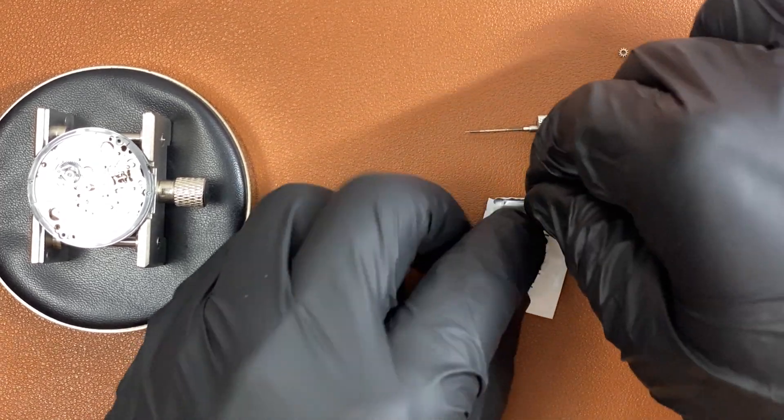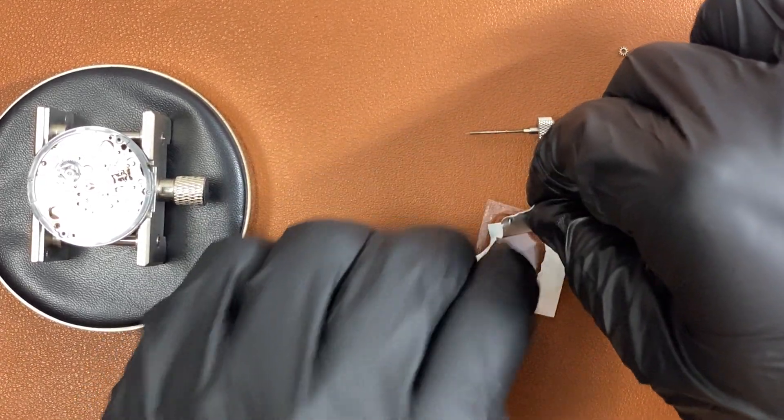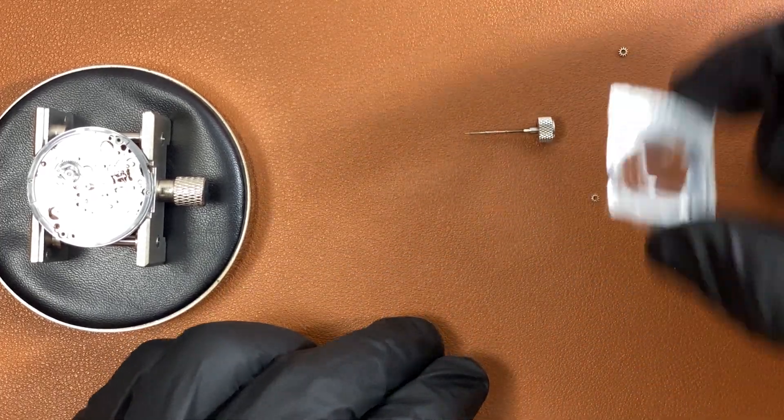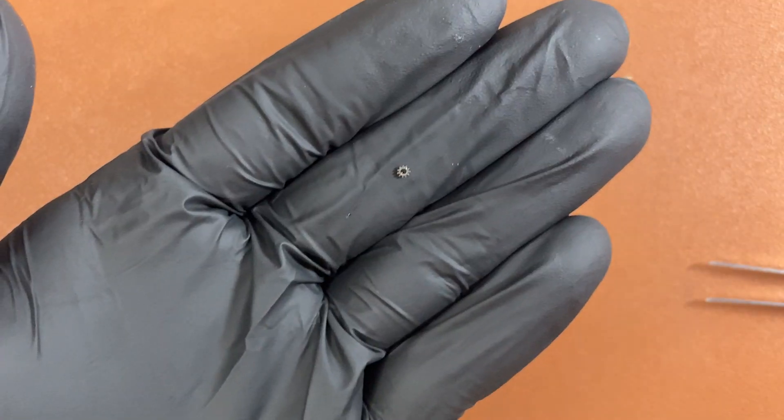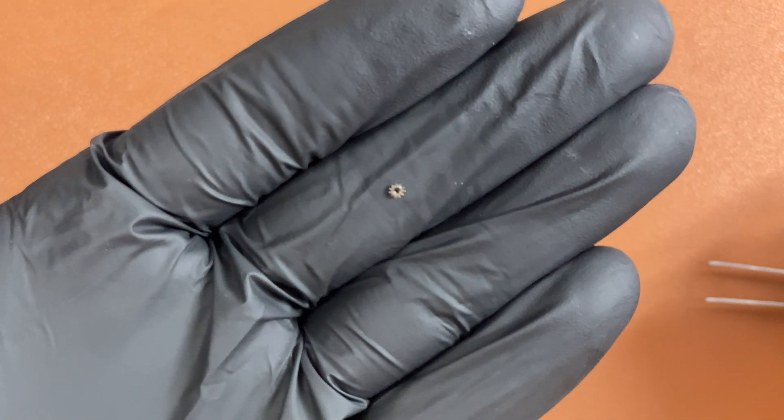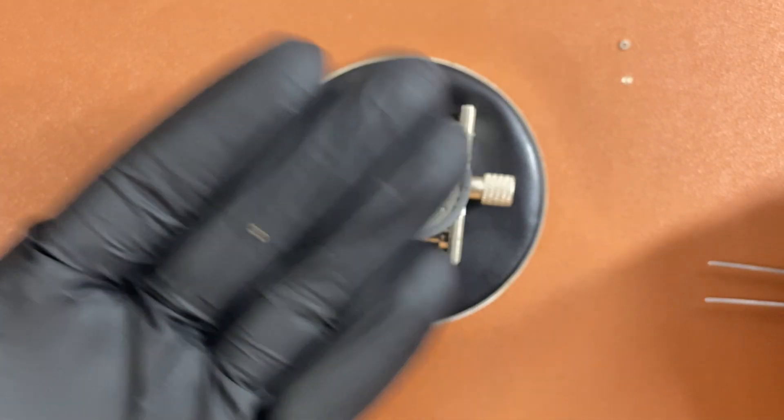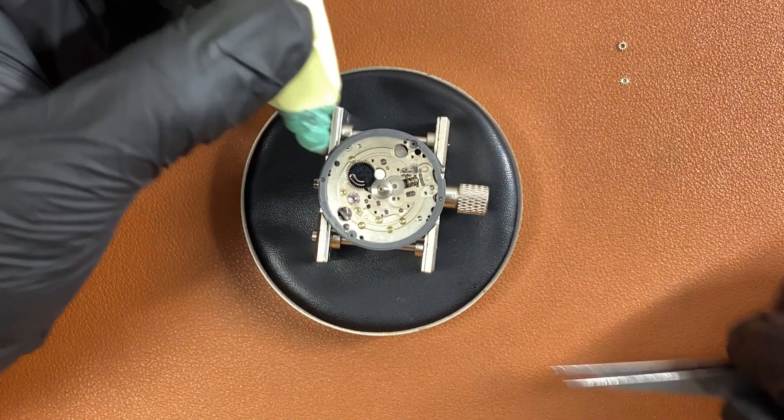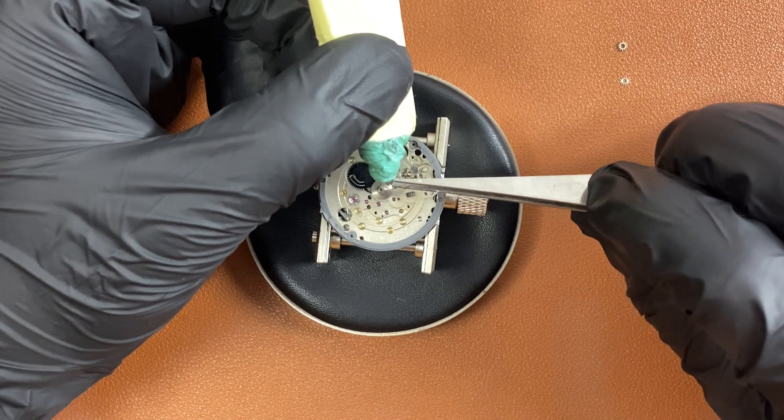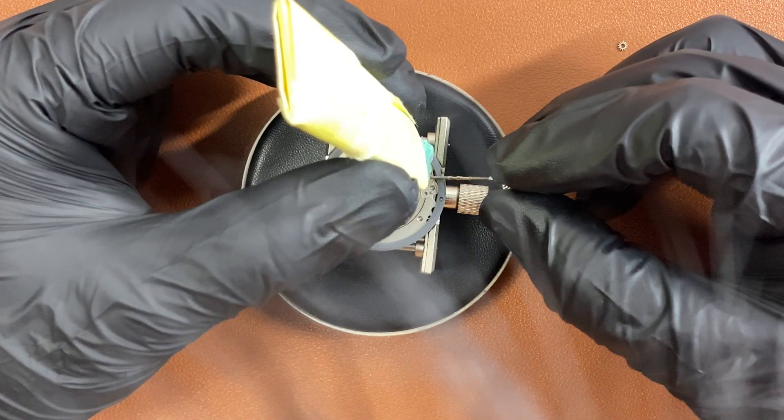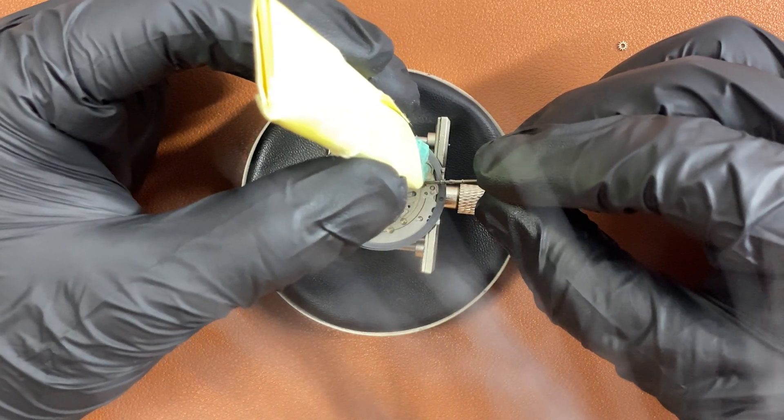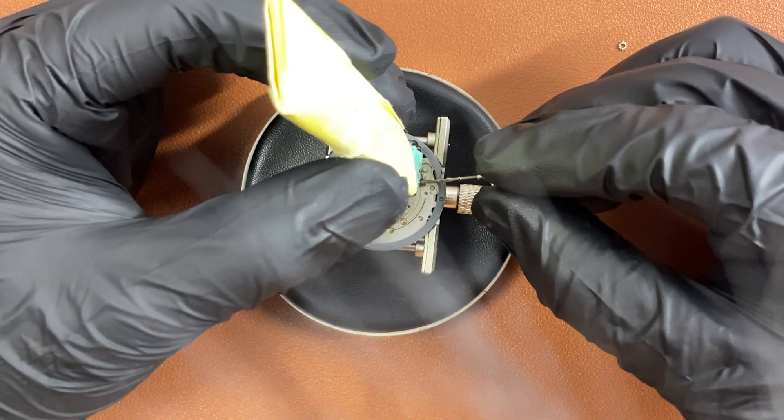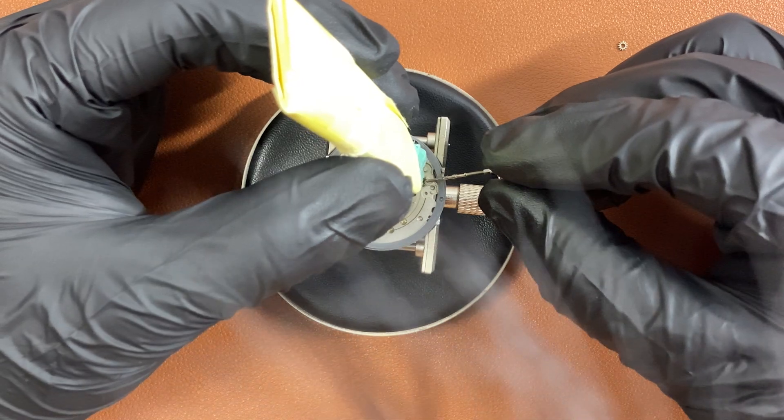The affiliate link to buy this exact part is linked in the video description down below. It's really small, so make sure to be careful not to lose it. Use the rodico to actually pick it up and then slowly slot it in the spot that we removed it from. Remember, it actually sits vertically against the entire movement.